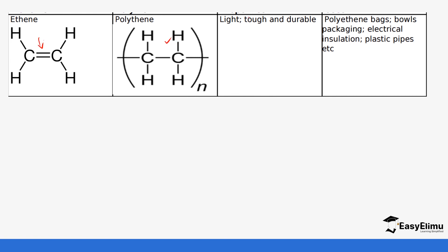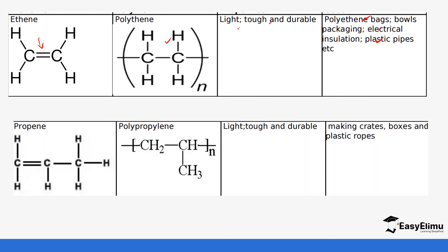Polyethene is shiny, light, and durable. It is used to make polyethene bags, electrical insulation, and plastic pipes. Those are some of its uses. Polypropene is made from propene molecules.